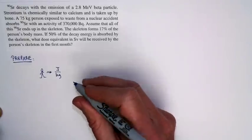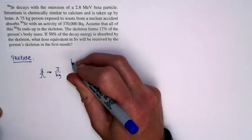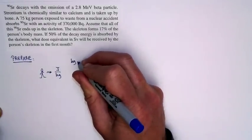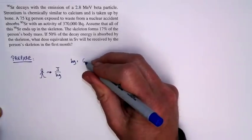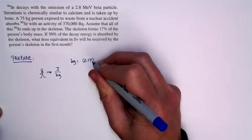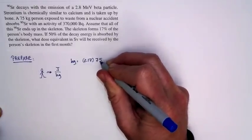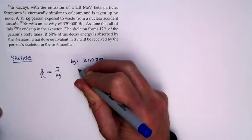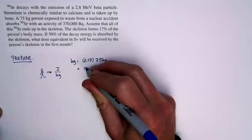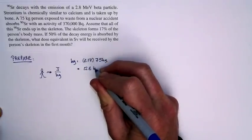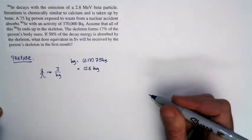So first off, I need to figure out how many kilograms the skeleton corresponds to. The kilograms of the skeleton: it's 17% of the body mass, so 0.17 times the 75 kilograms of the actual person. So we end up with a skeletal mass of 12.8 kilograms. That's going to be an important number for us.